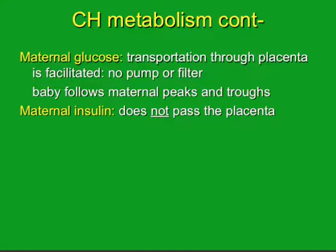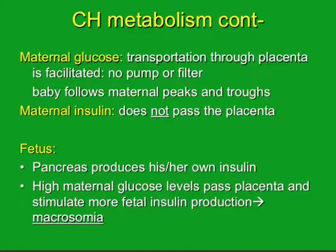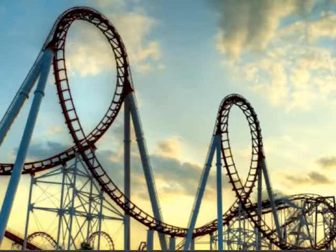Maternal insulin does not cross the placenta. However, the fetus produces its own insulin via the fetal pancreas. If high maternal glucose levels pass through the placenta, the baby will increase its insulin production, and those high levels contribute to macrosomia. The fetus is almost on a roller coaster — following the maternal blood sugar levels — and it is important that we try to prevent these peaks and troughs.